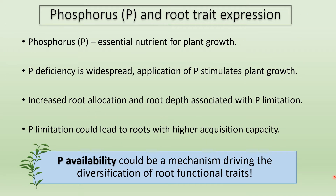Phosphorus is an essential nutrient that's vital for plant growth. It is an important component for processes such as photosynthesis and transfer of genetic information. Phosphorus deficiency is common and widespread in nature and is often cited as one of the main factors limiting plant growth. The application of phosphorus fertilizer is known to provide stimulation for plant growth. Some studies have revealed that adaptations such as increased plant root allocation and increased root system depth are associated with phosphorus deficiency. So by extension, if limitation in phosphorus results in more investment in roots, it could also lead to the development of roots with higher absorptive capacity — roots that are more productive and better at exploring and acquiring soil nutrients. So phosphorus availability could be a mechanism driving the diversification of root functional traits.